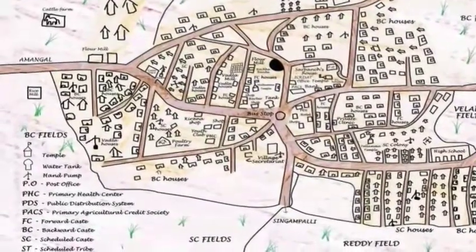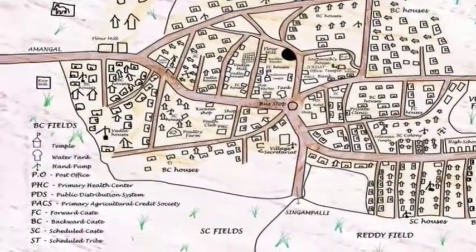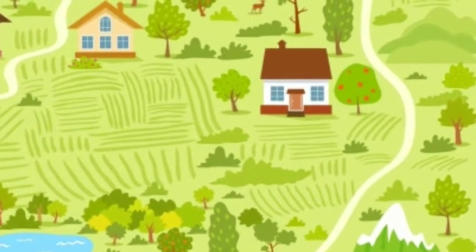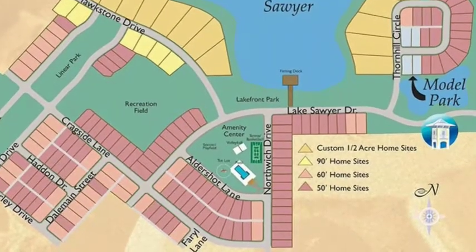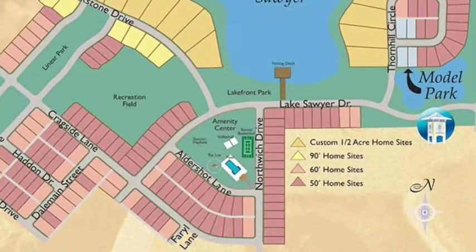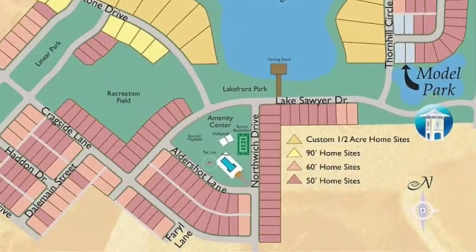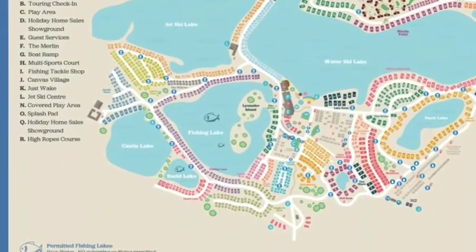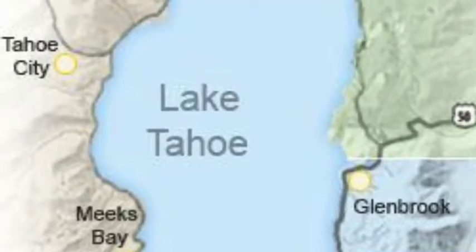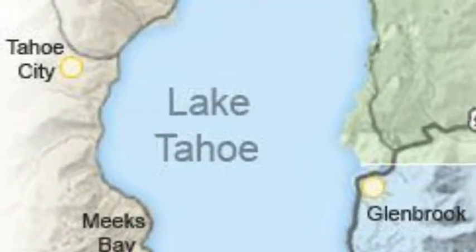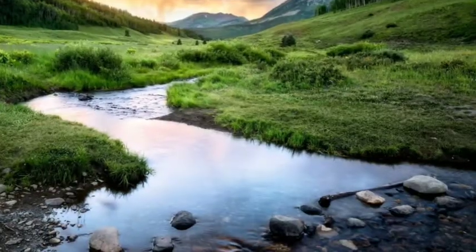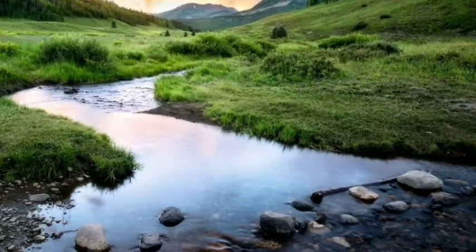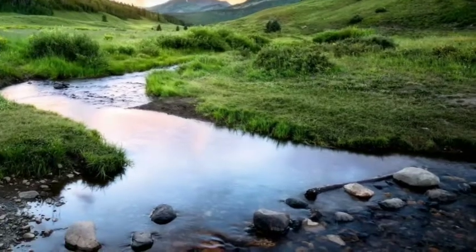Divya and Rani decided to draw a map of their village and all its tanks and streams, showing all the places where the water might have flowed — by the rocks, in the canal. Where could the water possibly have gone?